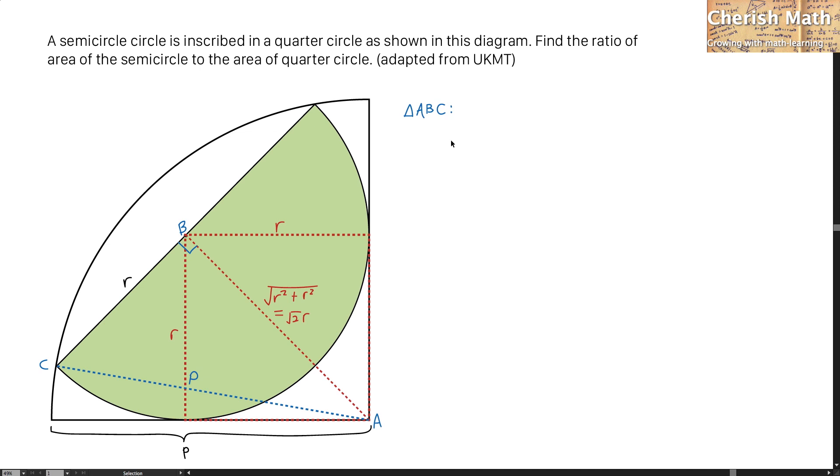According to triangle ABC, I am now going to use Pythagoras theorem. P square equals R square plus square root 2 times R squared. And after I simplify it, P square equals 3 times R square.